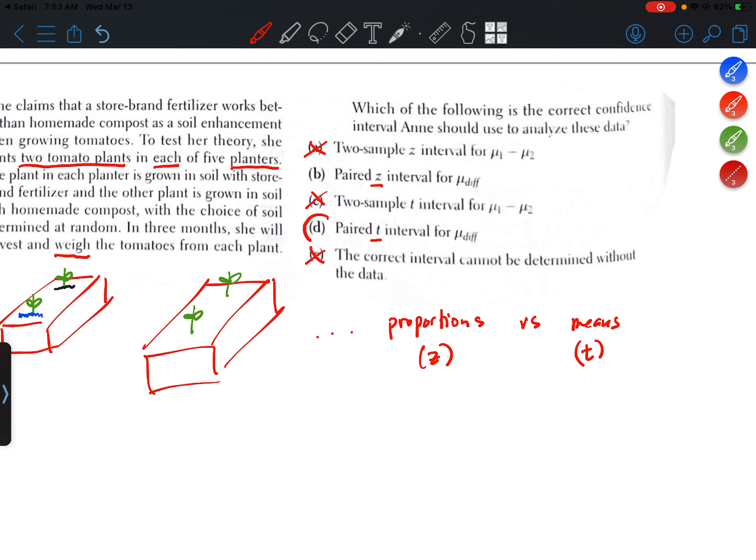So the correct answer is going to be D, right, because she would be analyzing the mean difference. Well, in either case, both choices say mu diff. So we know it's going to be about a mean. And so we could eliminate B because we do not use Z procedures for means. We only use T procedures for means.